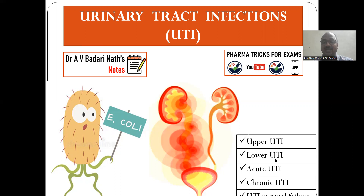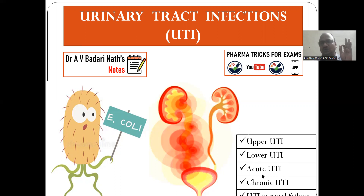Lower UTI: if there is an infection in the urinary bladder, penis, urethra, or vagina — whatever it may be. Acute urinary tract infection is for a short time; chronic urinary tract infection is for a long time. Chronic UTI can lead to kidney failure, and it is very problematic to treat this condition.